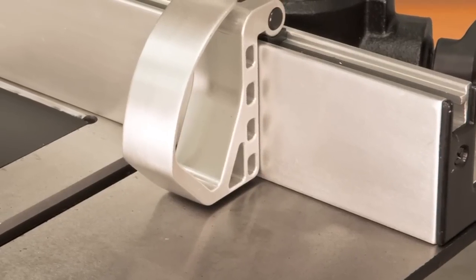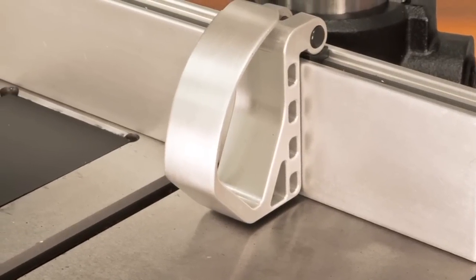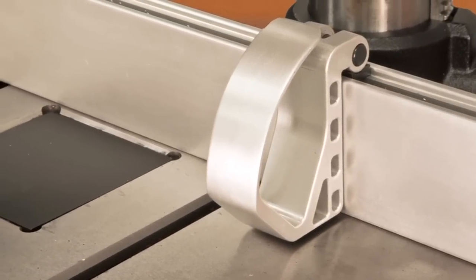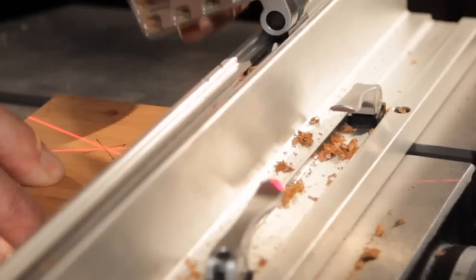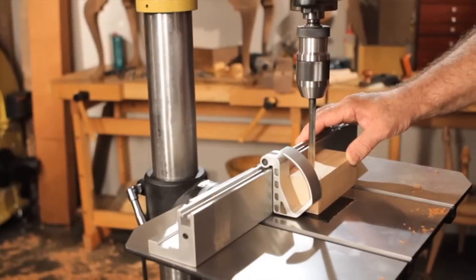The adjustable stop is yet another example of why the PM2800B is great to work with. Set the material stop in place, it stays there, making it easy to complete repetitive tasks accurately over and over.